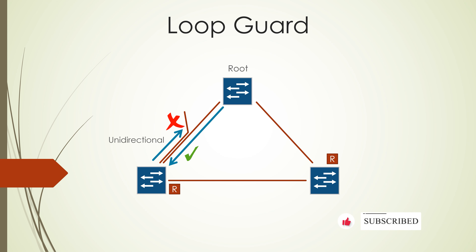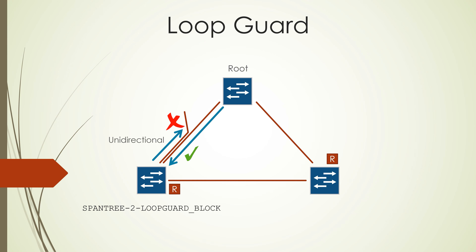If the LoopGuard feature is enabled, it will be able to see this and then it will do two things. It will put the port into an inconsistent state and it will generate a syslog message so we know about it. When that port starts receiving BPDUs again, it will automatically recover from the inconsistent state and start working normally again.